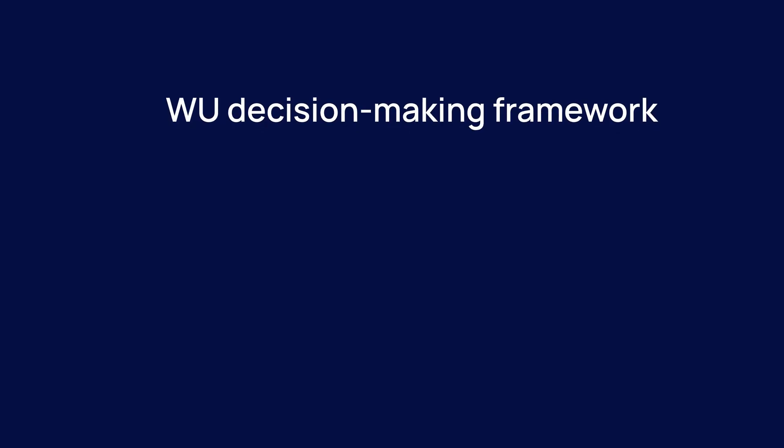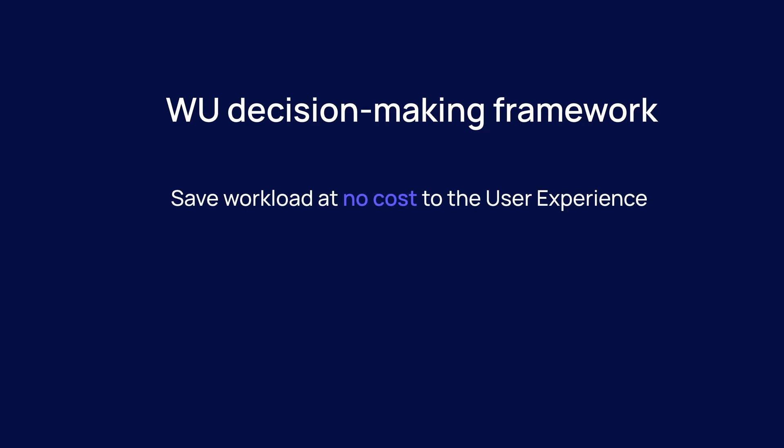When it comes to striking the balance between workload and the user experience, you can think about decision-making on three levels. Number one: save workload at no cost to the user experience. If you can implement or change a process that saves your workload at no cost to your user's experience, the decision is easy — go right ahead and implement it right away.